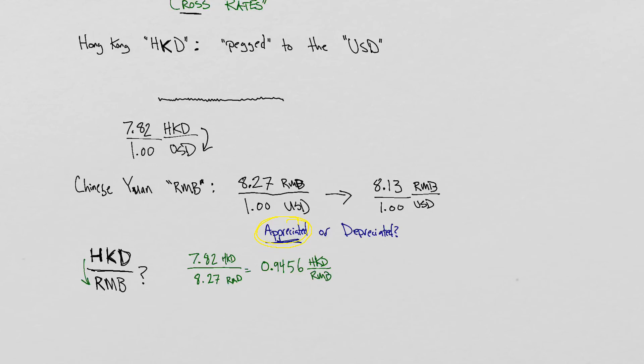And to see where it's gone after, we do the same thing, except we're looking at, well, the Hong Kong dollar hasn't changed versus the US dollar. It's pegged. But the Chinese yuan has changed. And that's gone up in value, appreciated to 8.13.